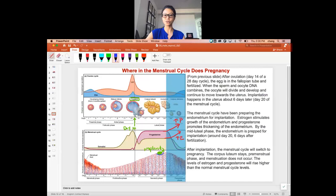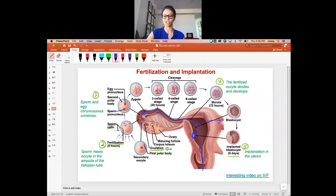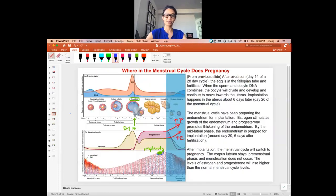That has to communicate to the body to stop menstruation. Because if menstruation happens, then the lining will shed and the implanted embryo will not be established. And then it's no longer a pregnancy. This endometrial layer cannot shed. That message has to be communicated to the female body.